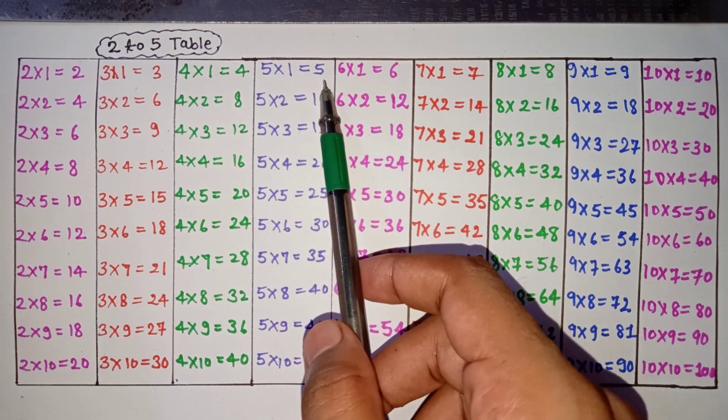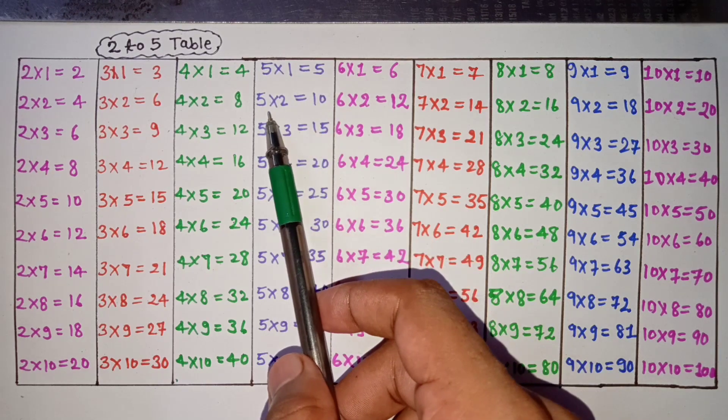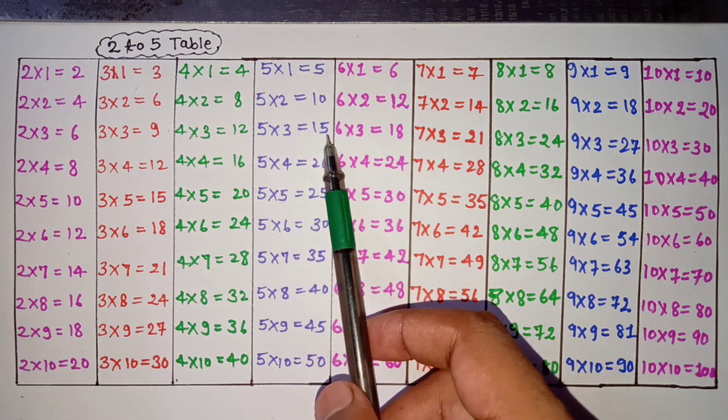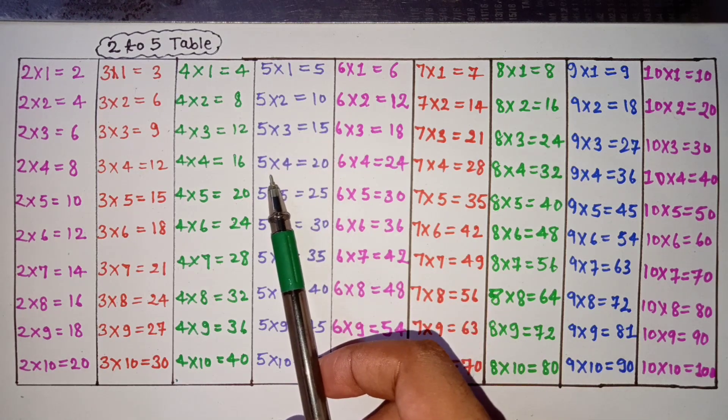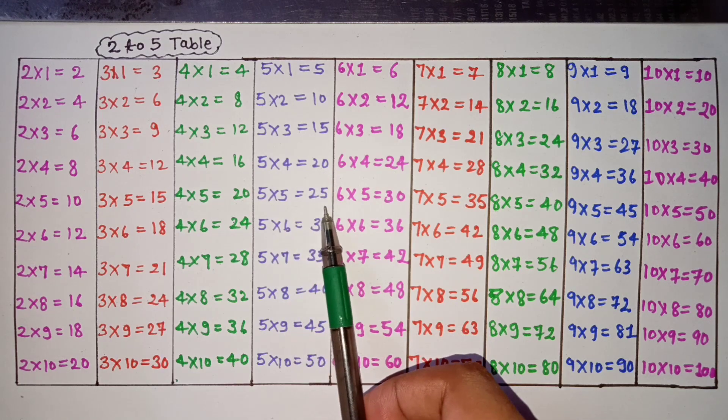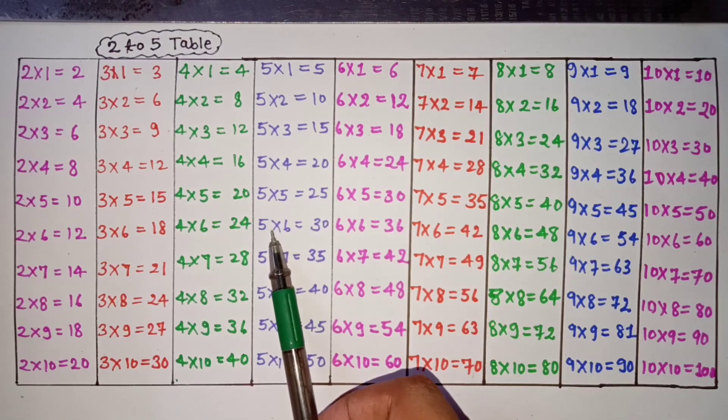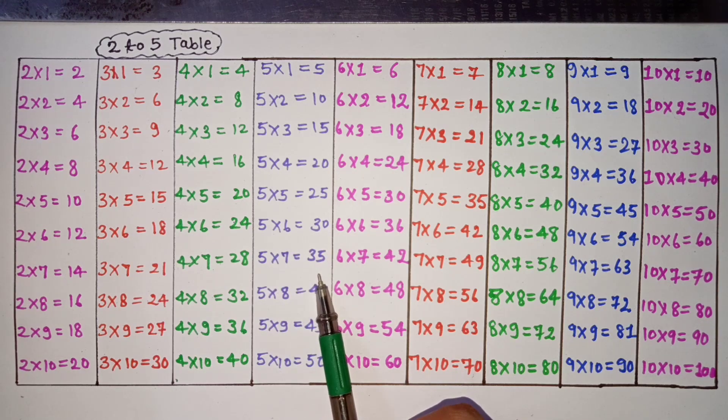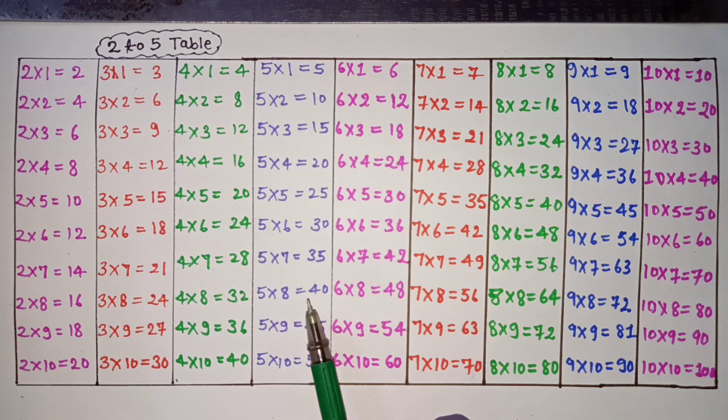5 ones are 5, 5 twos are 10, 5 threes are 15, 5 fours are 20, 5 fives are 25, 5 sixes are 30, 5 sevens are 35, 5 eights are 40, 5 nines are 45, 5 tens are 50.